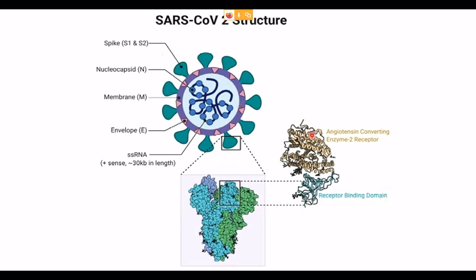It is an enveloped virus. You can see the enveloped virus studded with various proteins. You have spike protein — two types: S1 and S2. Then you have nucleocapsid, the membrane protein called EM, and the envelope protein called E. This is a single-stranded positive-sense RNA virus. The virus binds to the ACE2 receptor — the angiotensin-converting enzyme 2 receptor — present in the host cell in human beings.